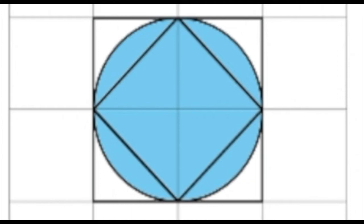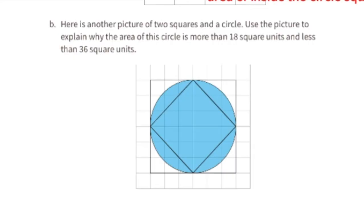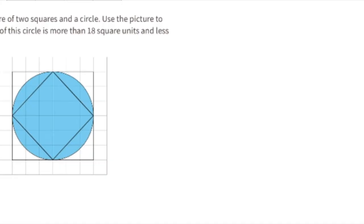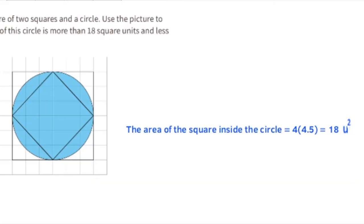Part b: here is another picture of two squares and a circle. Use the picture to explain why the area of this circle is more than 18 square units and less than 36 square units. The larger square is six by six — six times six is 36 square units. Since the circle is smaller than the larger square, its area is less than 36 square units. Just like in diagram a, the smaller square inside the circle is half the area of the larger square, so its area is 18 square units. Since the circle is larger than that inner square, the circle's area must be greater than 18 square units.